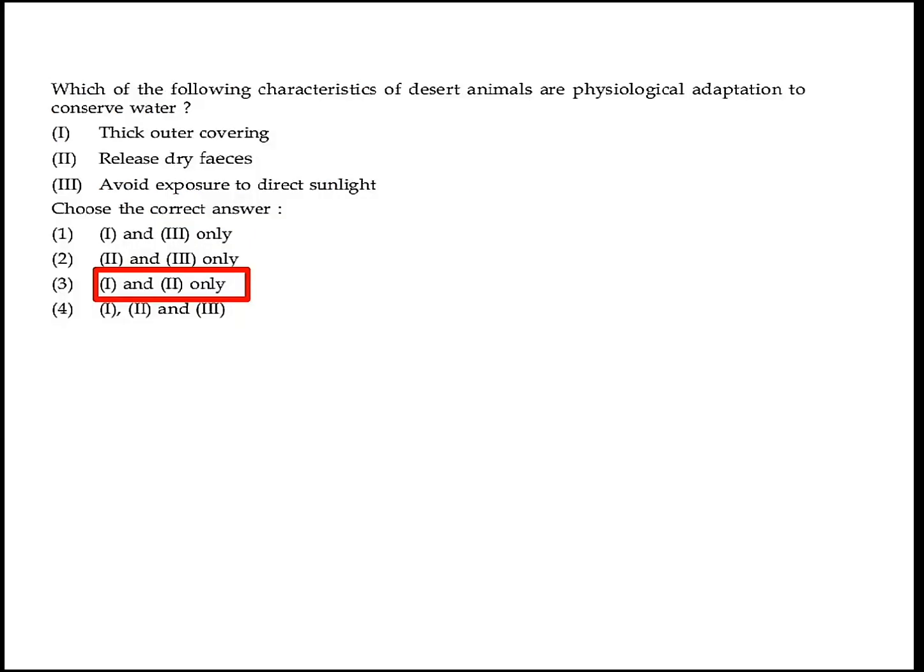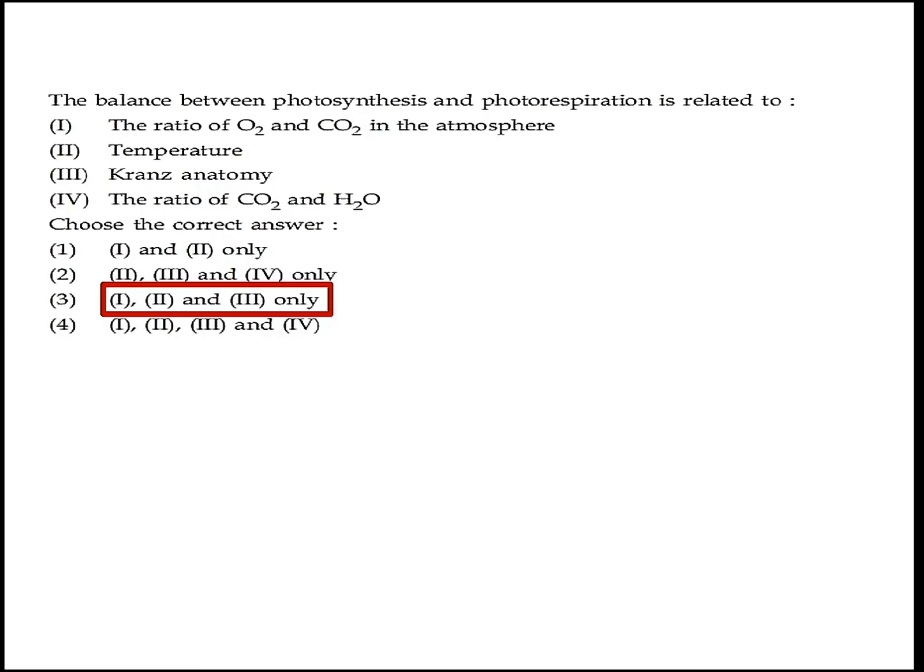The next question asks which of the following characteristics of desert animals are physiological adaptations to conserve water: thick outer covering and release of dry feces. Option 3 — 1 and 2 only — is the right answer.